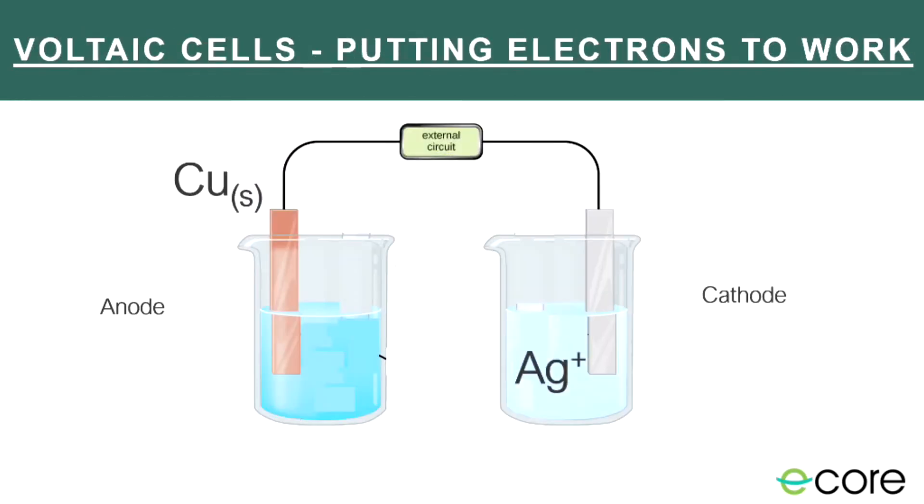So if we separate these two into separate beakers, and we connect them by a wire, we can actually make that electron run through a circuit to do work for us. Here what we've done is we've taken our copper metal, and we've put it in one beaker. And we've taken our silver ions and put it in another beaker. Again, probably a silver nitrate. And now what happens is my electrons still want to go from copper to silver, so I've connected it with a wire to allow them to do that. And now my electrons are going to flow through that wire, and maybe they could power some sort of light bulb or whatever else we wanted with our circuit.